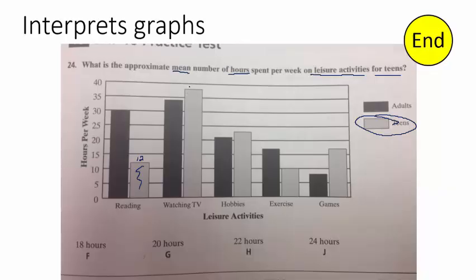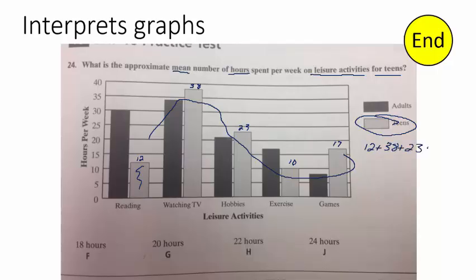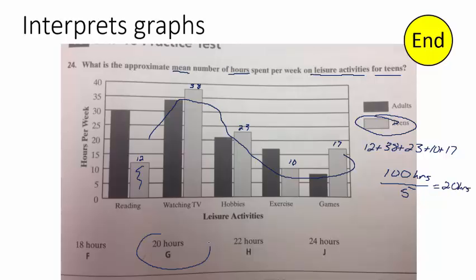I'm going to estimate that at about 12. Here's about 38. Here it looks like about 23, 10, and I'm going to go about 17. So these are your five activities. When we want the average, we need to add these five numbers together and divide by five. So we've got 12 plus 38 plus 23 plus 10 plus 17. See if you can do it in your head: 50, 73, 83, 90, 100 hours spent. Divide that by five — look what happens — we get 20 hours. Choice G.